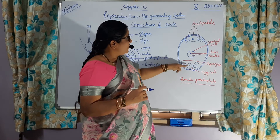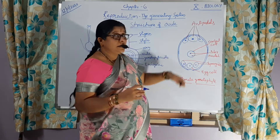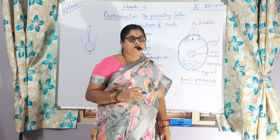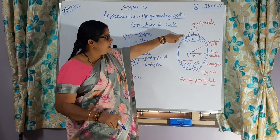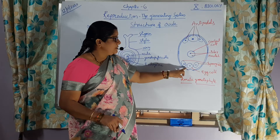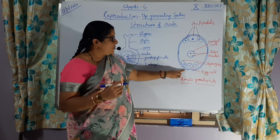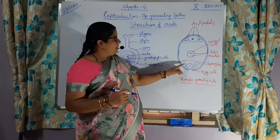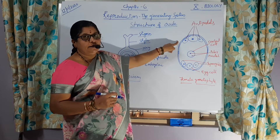So, what is happening here? After fertilization, these antipodals and synergids are going to fall off. The antipodals move to the anterior region and the synergids move to the micropylar region here. So, this is about the female gametophyte.